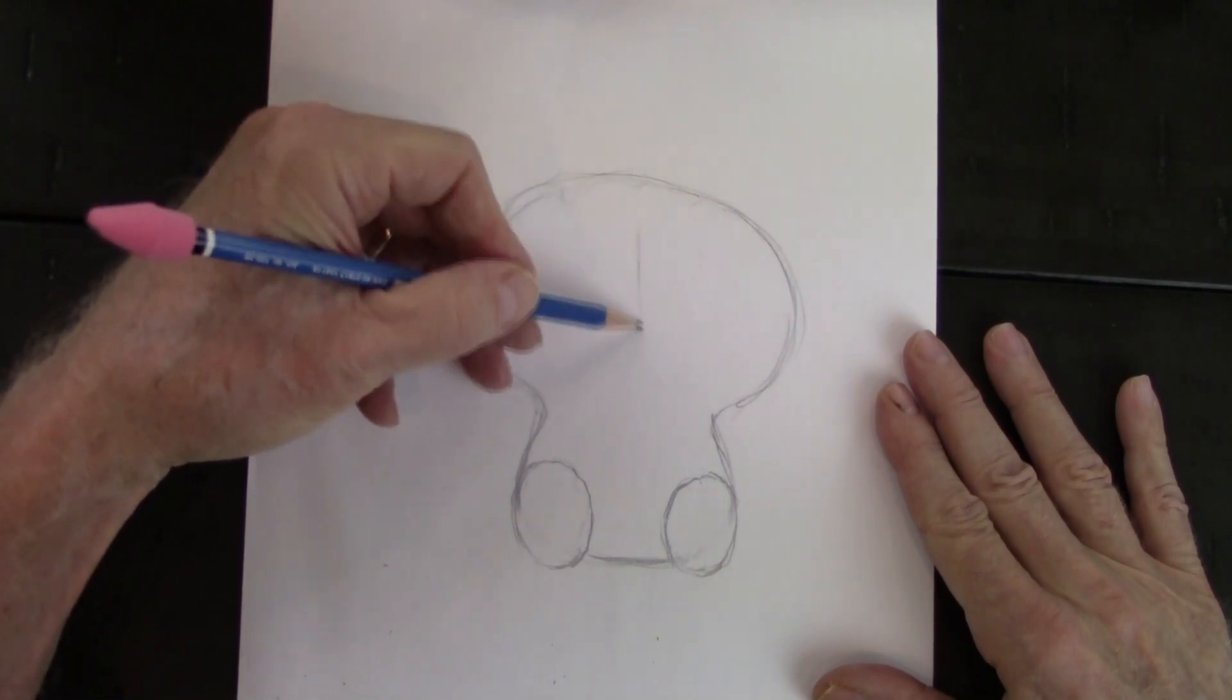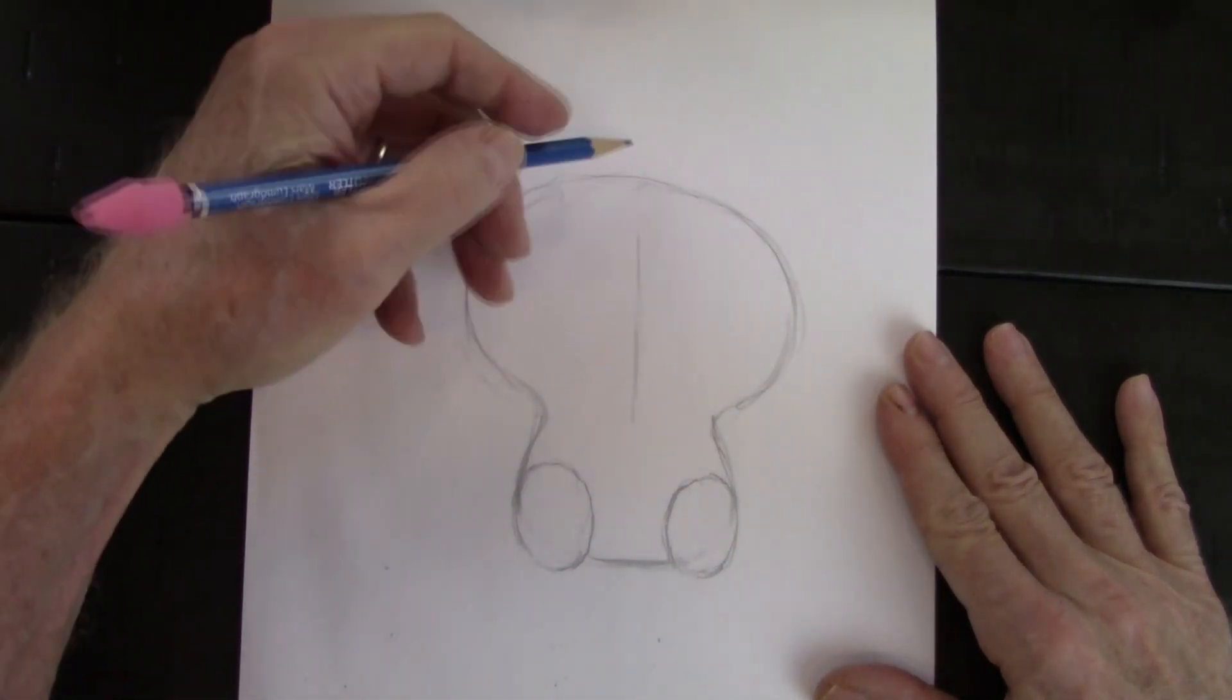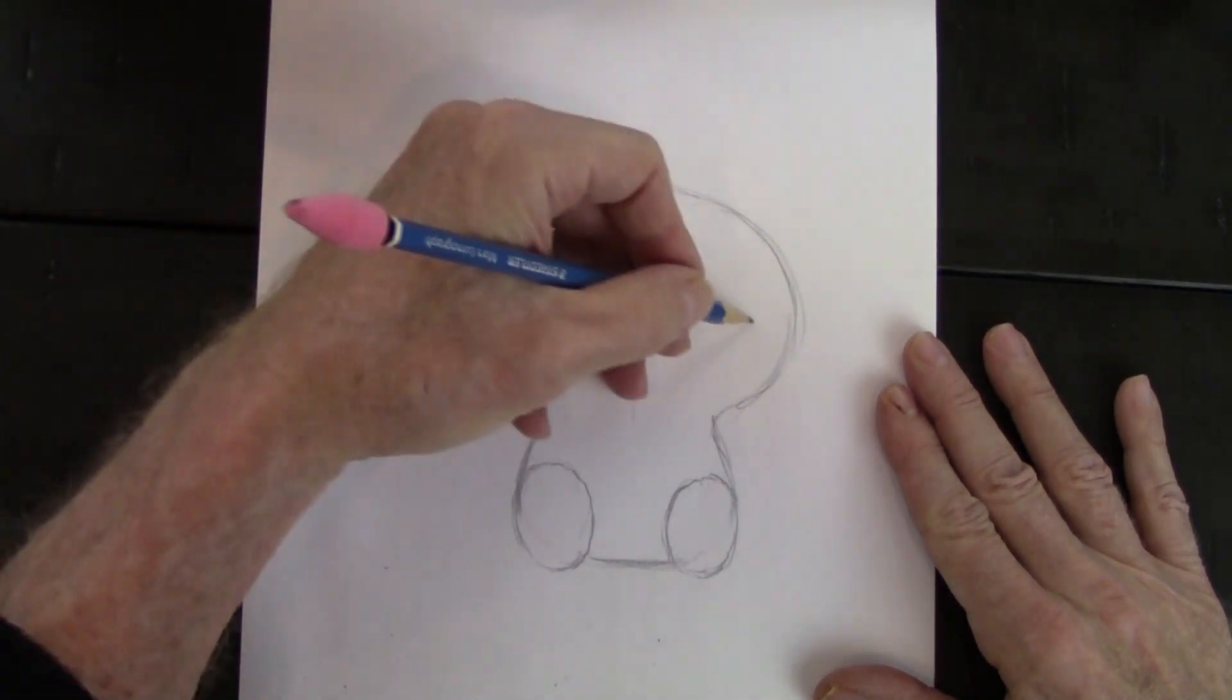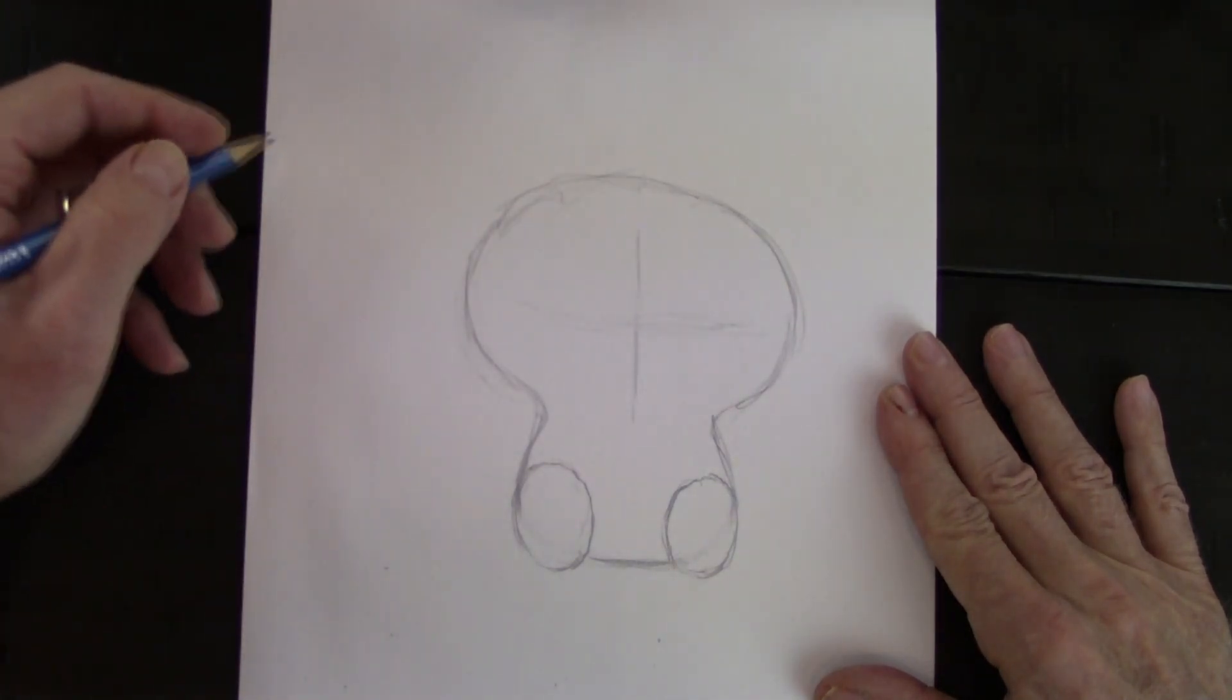You've seen this of course. The famous center line. Divide the head into two. And the eye line right here, halfway down the head. So we keep the eyes even.